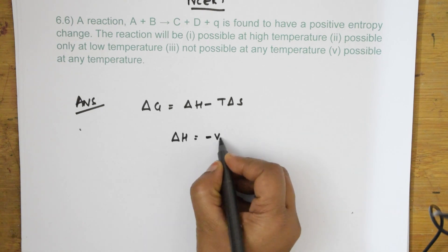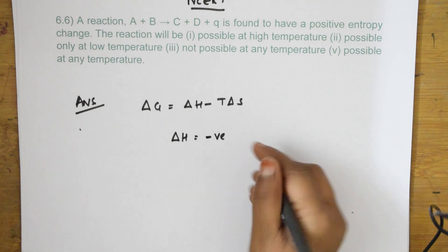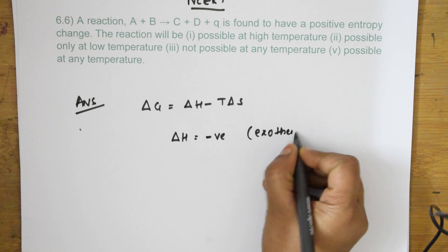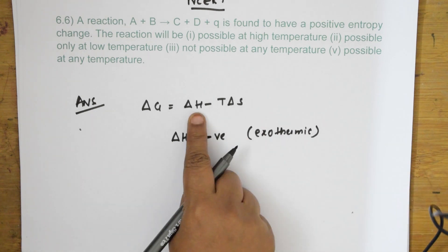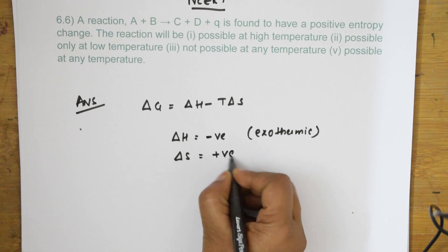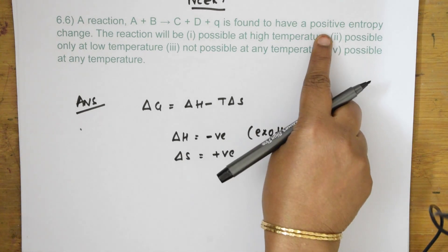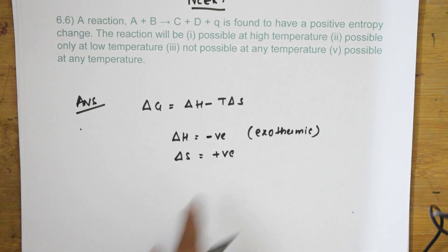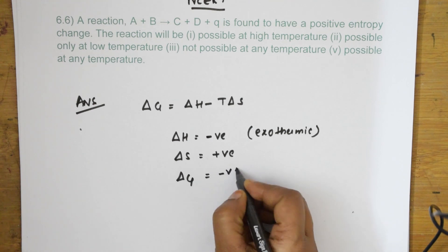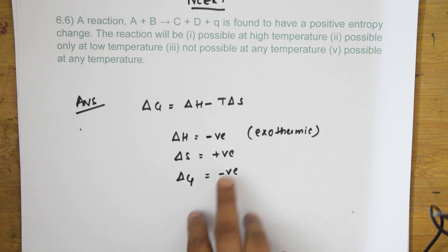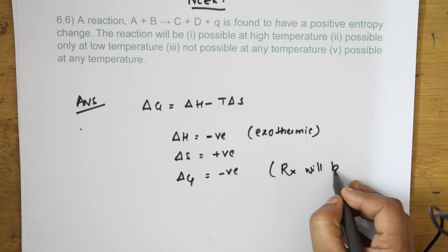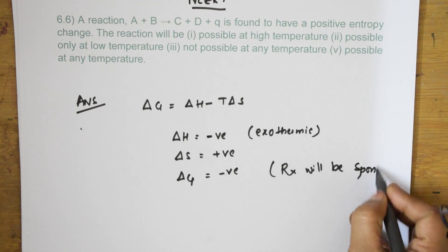When ΔH is negative, the heat content decreases, meaning it is an exothermic reaction. Then entropy obviously becomes positive — which is what the question states. When entropy is positive, ΔG automatically becomes negative, and when ΔG is negative, the reaction is spontaneous.